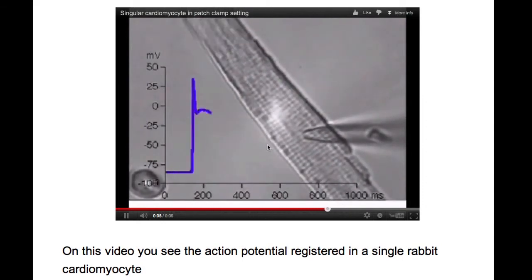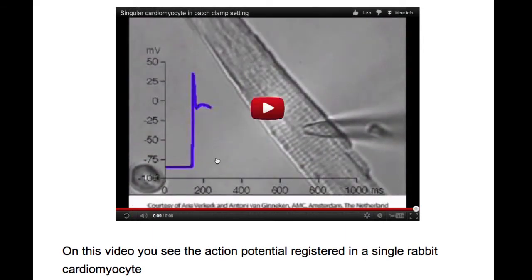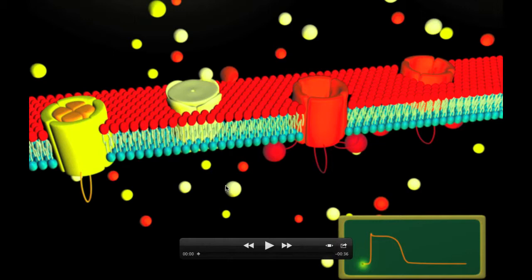This is a rabbit cardiomyocyte with a glass electrode recording the electricity in a single cardiomyocyte. The graphical description of the cell membrane shows a sodium channel, a calcium channel, and potassium channels.